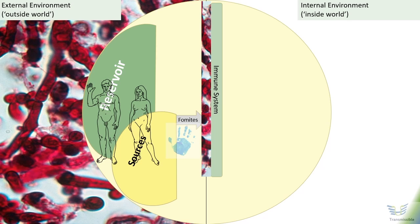Researchers found that when surfaces are contaminated with E. coli, Salmonella, or Staphylococcus aureus, there is a 100 percent chance that touching them will transfer these pathogens to your hand, and this chance is also 90 percent for Candida. The key barriers that prevent Candida from entering our internal environment are formed by our intact skin and the strength of our immune system.